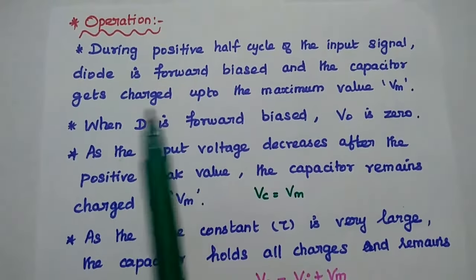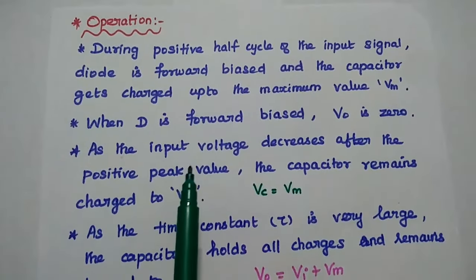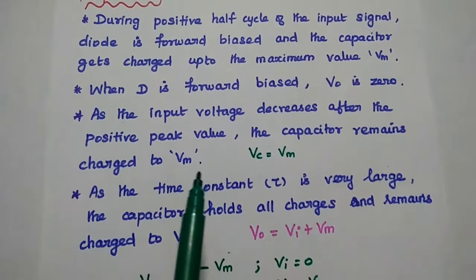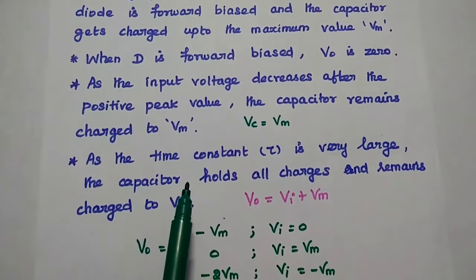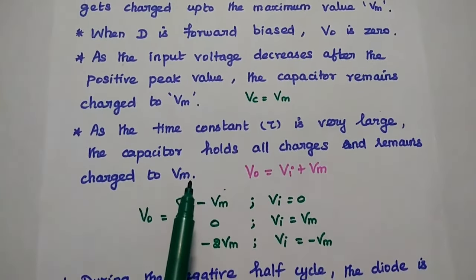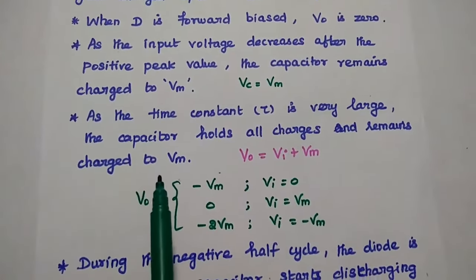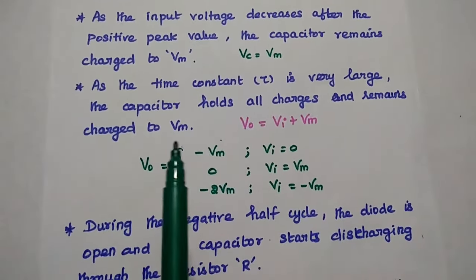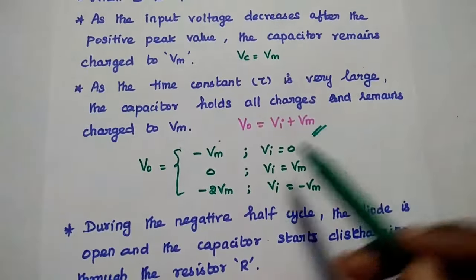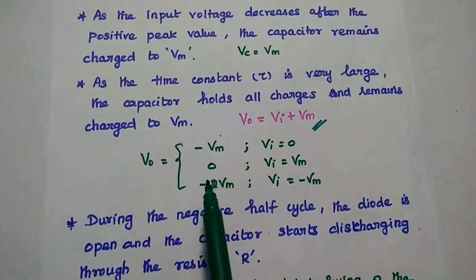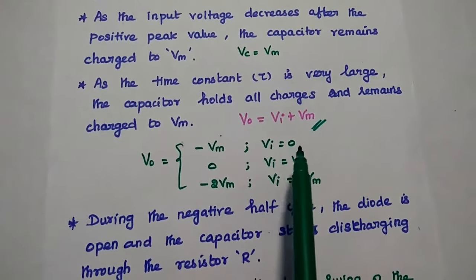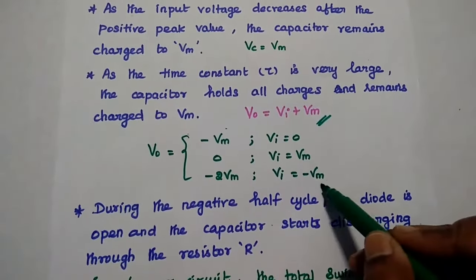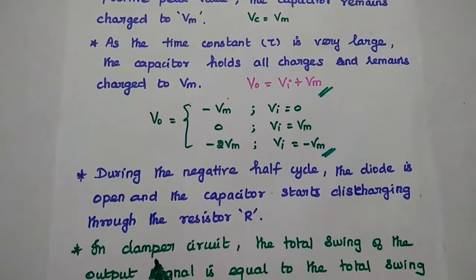During the positive half cycle, the diode is forward biased and the capacitor is charged up to the maximum value Vm. When the diode is forward biased, there is no output. As the input voltage decreases after reaching the positive peak, the capacitor remains charged to the maximum voltage due to the large time constant. At the point where Vi = Vm, the output is 0. When Vi = 0, the output is −Vm. When Vi = −Vm, that is the negative peak, we can get the maximum output.